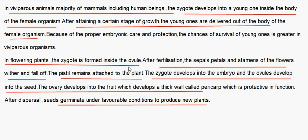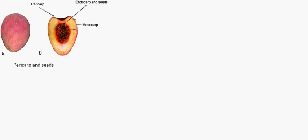In flowering plants, the zygote is formed inside the ovule. After fertilization, the sepals, petals, and stamens wither and fall off, while the pistil remains attached to the plant. The zygote develops into an embryo, the ovule becomes the seed, and the ovary becomes a fruit, developing a thick wall called the pericarp which is protective in function. After dispersal, seeds germinate under favorable conditions to produce new plants. In the picture, you can see the ovary wall forming the pericarp, the endocarp, and the seeds.